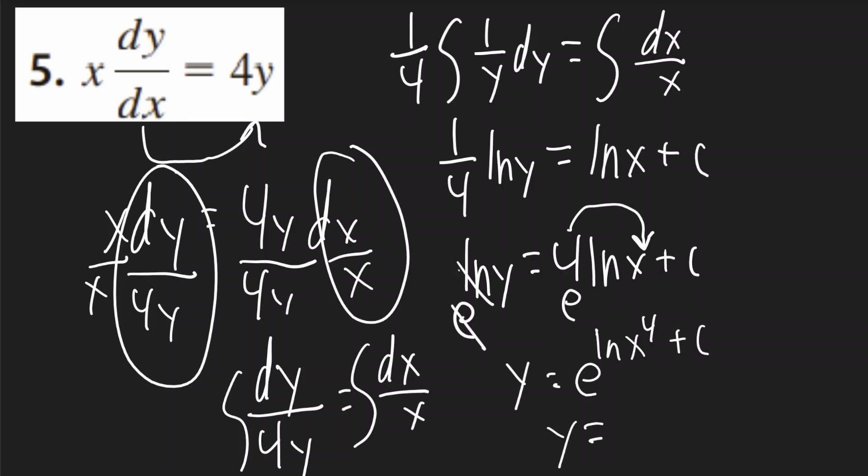So y will be equal to, this will become x to the 4 times e to the c, and e to the c is just c. So your final answer will be x to the 4 times c. And that is your final answer.